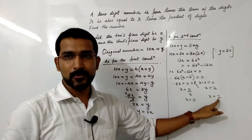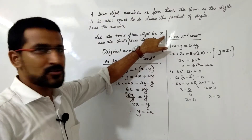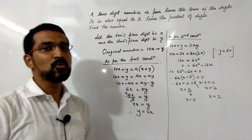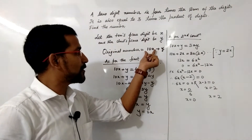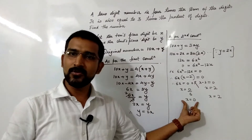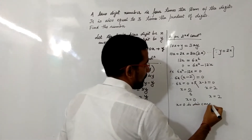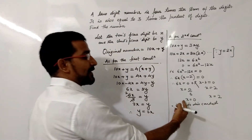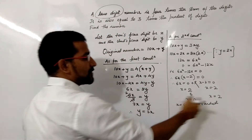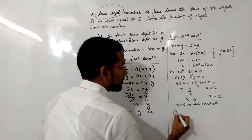We got x = 0 or x = 2. Since x represents the tens place digit, if x = 0 then it becomes a one-digit number, but the problem states it is a two-digit number. So we take x = 2.